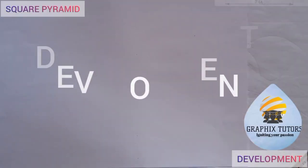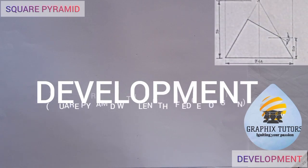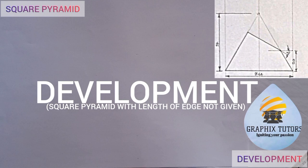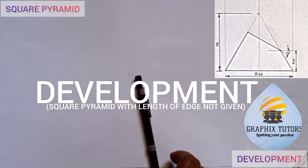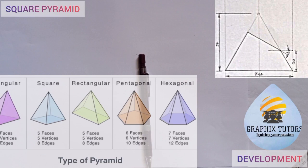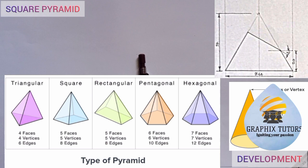My name is Graphics. In this video we want to construct a pyramid. In our previous video we constructed a cone, and the major difference between a cone and a pyramid is that a pyramid has a polygonal base. The base of a pyramid can be a square, hexagon, triangle, rectangle, or any other shape — except a circle. Once the base is a circle, you call it a cone, not a pyramid.